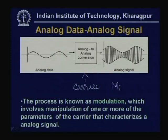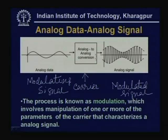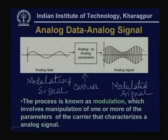Either one of these parameters individually, or a combination of them, are modified to generate a signal known as the modulated signal. The input signal to be modulated is known as the modulating signal. The modulating signal and carrier are both applied to the modulator, and this process of conversion from analog data to analog signal — which involves manipulation of one or more parameters of the carrier (amplitude, frequency, or phase) — is known as modulation.